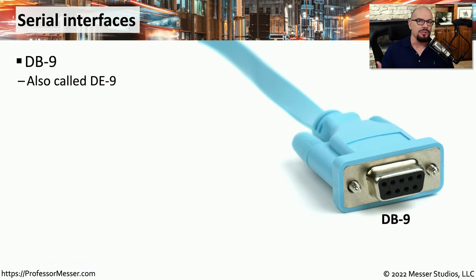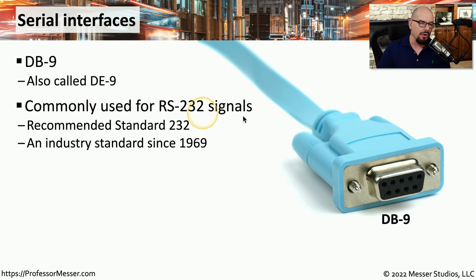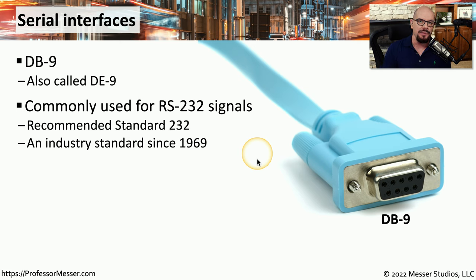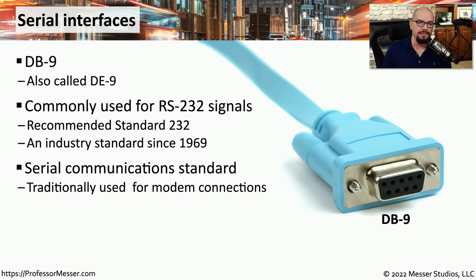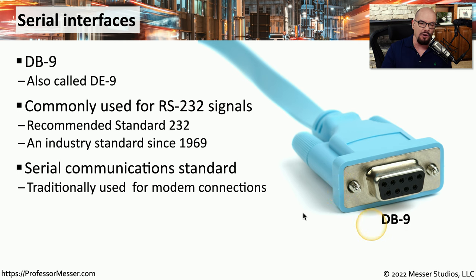Before the advent of universal serial bus, we still used serial communication but with different interfaces. Commonly, it used a DB9 interface, a 9-pin connection sometimes referred to as a DE9 connection. These serial cables commonly transported RS-232 signals, a standard of communication that has been around for a very long time. You can probably still find devices in your infrastructure that use DB9 connections with RS-232 to connect and view consoles on switches and routers. Before USB was invented, this was the serial connection used for almost everything, including modems and mice.